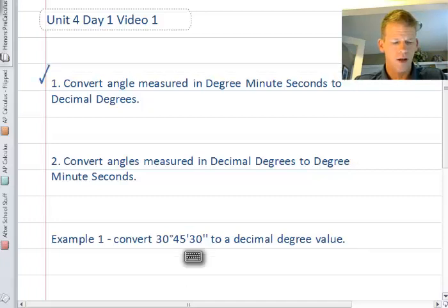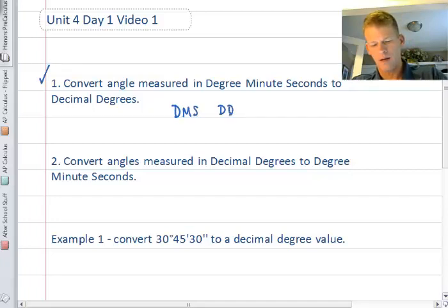In our first objective we're going to work on converting angle measures in degree minute seconds to decimal degrees. On your calculators you would see DMS and DD, which stands for degree minute seconds or decimal degrees.